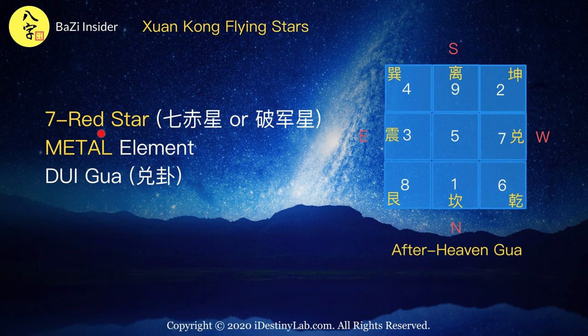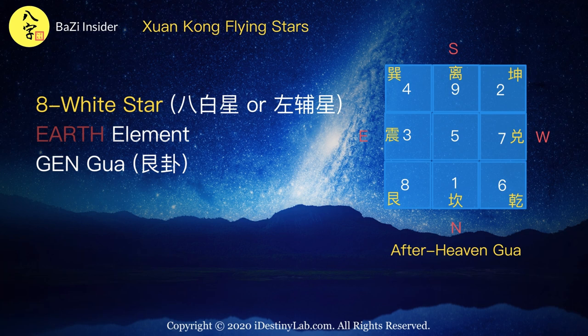Seven red star is also known as Qi Qi Xing or Po Jin Xing in Chinese. Its fine element is metal and it is located inside the Dui Gua of the 8 trigrams Ba Gua palaces. Eight white star is also known as Ba Bai Xing or Zuo Fu Xing in Chinese. Its fine element is earth and it is located inside the Gen Gua of the 8 trigrams Ba Gua palaces.